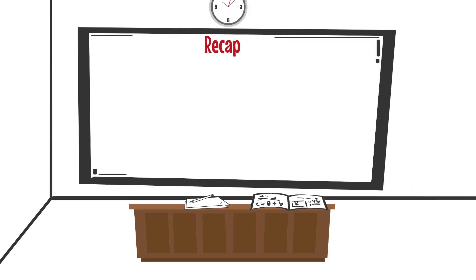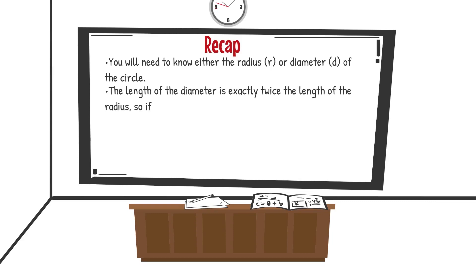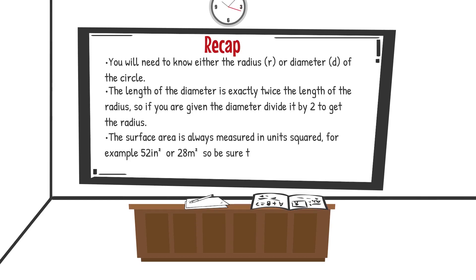Let's look at a quick recap. When calculating the surface area of a sphere, you're going to need to know the radius, abbreviated as r, or the diameter, abbreviated as d, of the circle. The length of the diameter is exactly twice the length of the radius, so if you're given the diameter, divide it by 2 to get the radius. The surface area is always measured in units squared — for example, 52 inches squared or 28 meters squared — so be sure to write your answer as a measurement squared.